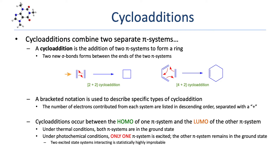In the first example, we see a cycloaddition between two molecules of ethene to form cyclobutane. Each pi system contributes two electrons to the reaction mechanism and is therefore considered a [2+2] cycloaddition. In the second example, we see a cycloaddition between ethene and 1,3-butadiene to form cyclohexene. The butadiene contributes four electrons to the mechanism and the ethene contributes two, so the reaction is considered a [4+2] cycloaddition.